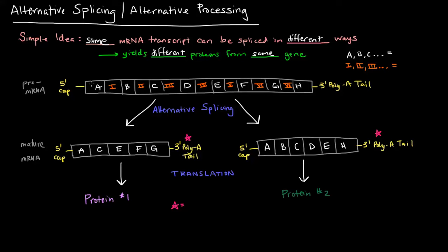If we imagine this example, this is a pre-mRNA with its 5' cap and its 3' poly-A tail. Each of these letters, A, B, C all the way through H, represents exons—the sequences that are supposed to end up in the mature mRNA. These roman numerals represent introns, which will be cut out and will not be in the mature mRNA.